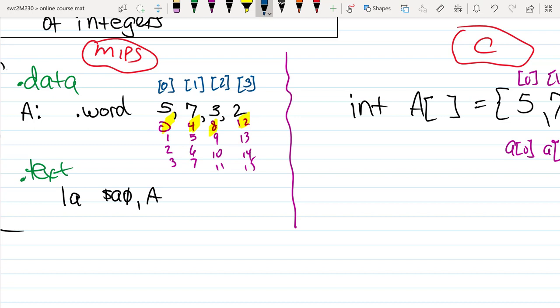So notice the relationship between the indices and the offset from the beginning of the array. So 0 is the initial address relative to the beginning of the array, and then byte 4 is where 7 starts, byte 8 is where the 3 starts.